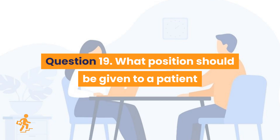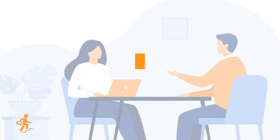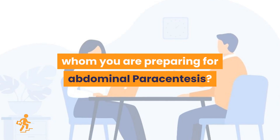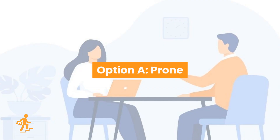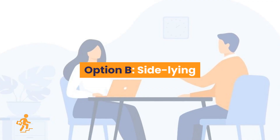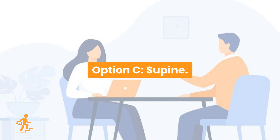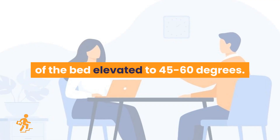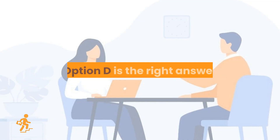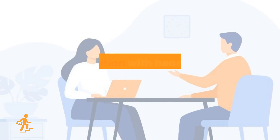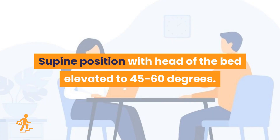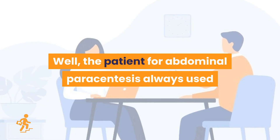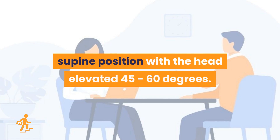Question 19. What position should be given to a patient whom you are preparing for abdominal paracentesis? Option A: Prone. Option B: Side-lying. Option C: Supine. Option D: Supine position with head of the bed elevated to 45 to 60 degrees. Option D is the right answer. The patient for abdominal paracentesis should always be placed in supine position with the head elevated 45 to 60 degrees.